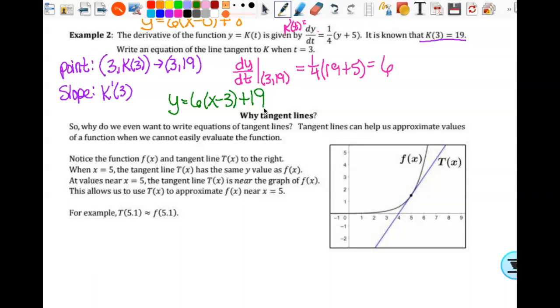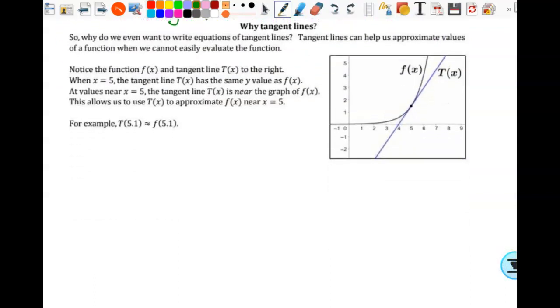Okay, so let's talk about why tangent lines. Why are we talking about this to be able to approximate things? So tangent lines help us approximate values. Well, they also tell us the rate of change at that specific point, right? But they can also help us approximate values that we cannot easily evaluate on the function. So note the function f(x). So here's my function. Here's the tangent line. When x is 5, the tangent line has the same values, right? So where they intersect, tangent line, they have the same value.